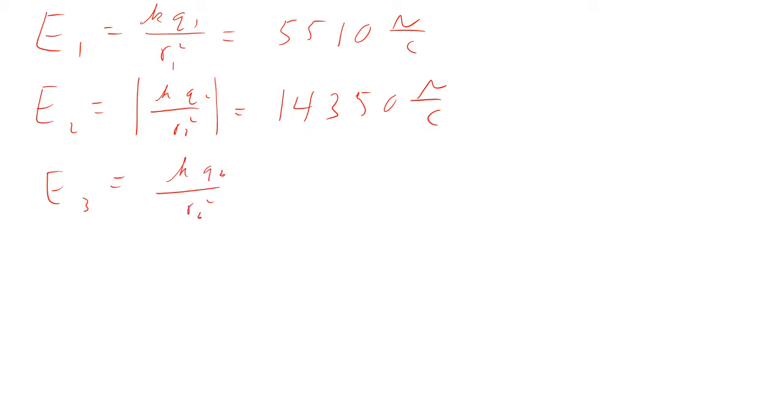So E1, that's going to be KQ1 over R1 squared. So K, 8.99 times 10 to the minus 9. So I'm just going to give you the answer here because you can multiply all this out. That comes out to be 55.10 newtons per coulomb. E2, I'm going to take the absolute magnitude of it because we'll get the direction in just a second. And so that's going to be 14.350 newtons per coulomb. And E3, KQ3 over R3 squared, that comes out to be 25.940 newtons per coulomb.